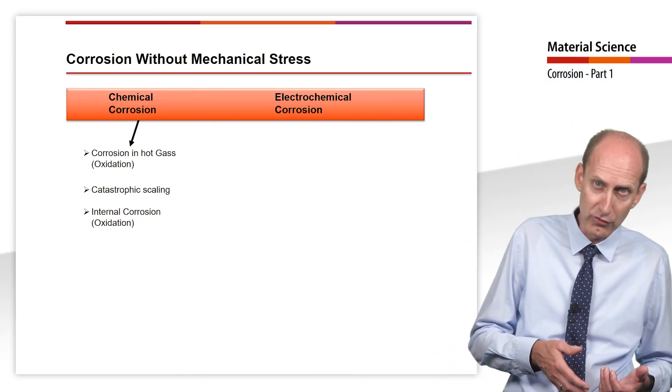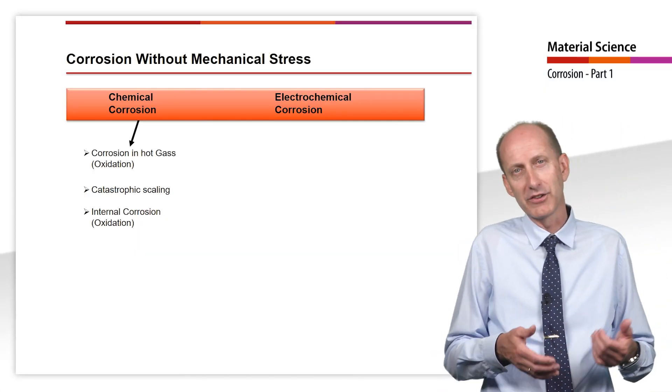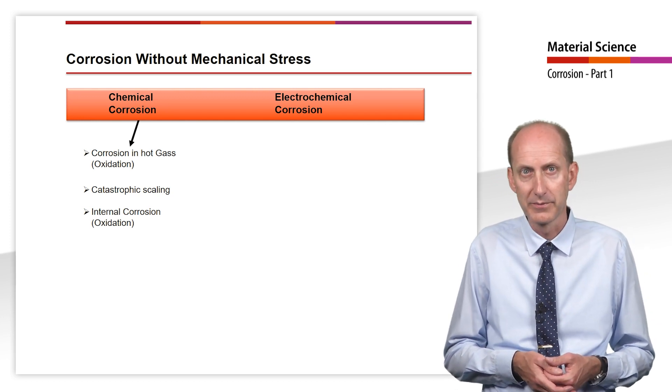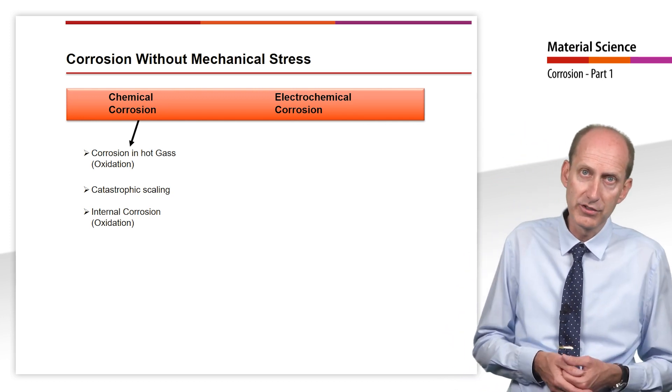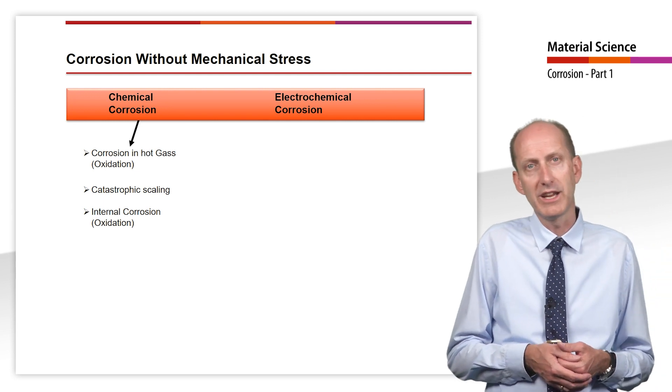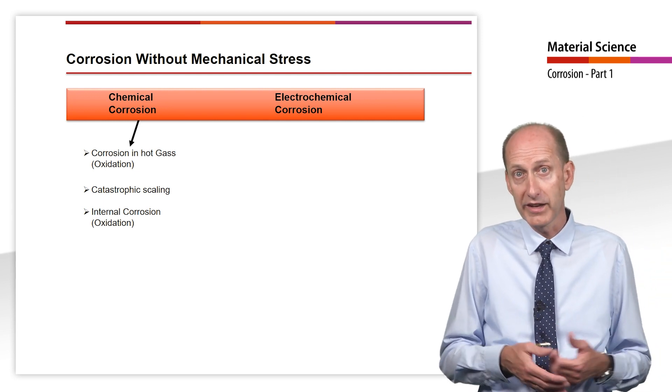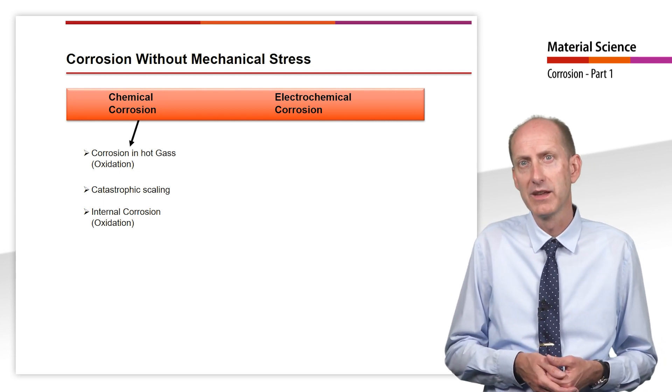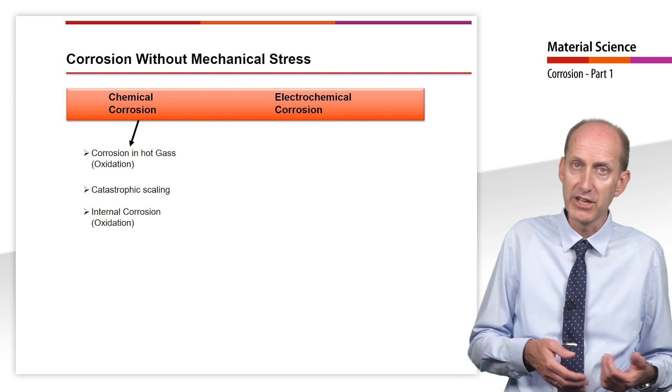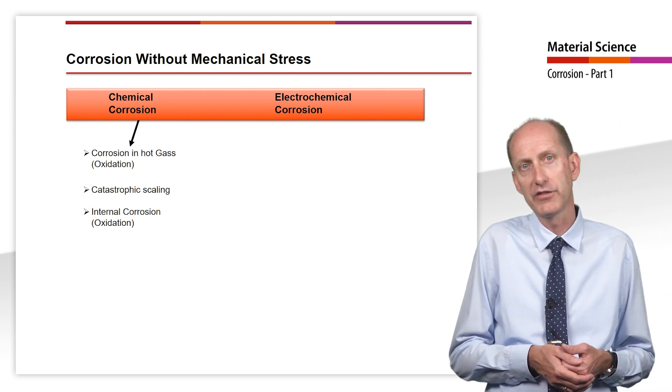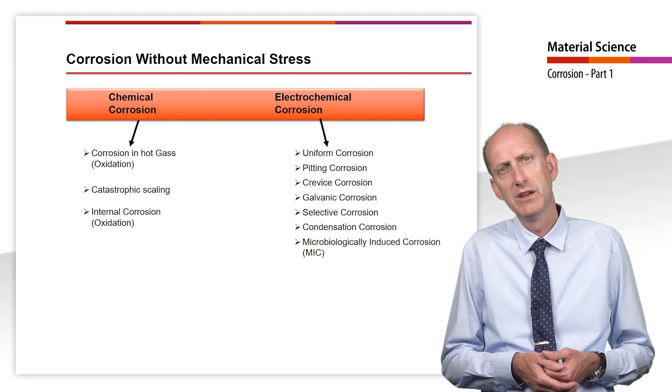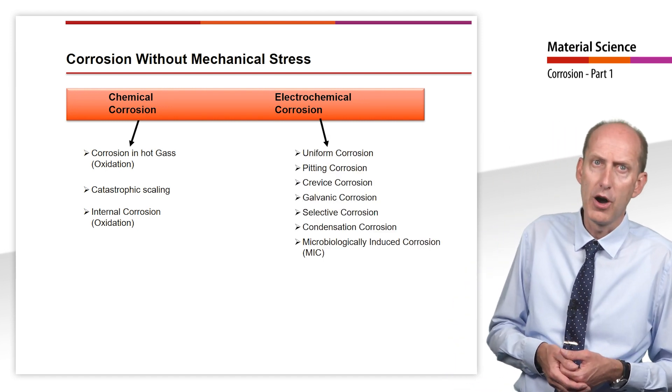Chemical corrosion without mechanical stress is the aforementioned corrosion in hot gases. Other types of corrosion that also lead to oxidation are catastrophic scaling, which is a more severe form of corrosion in hot gases, and internal corrosion, in which oxidation does not occur on the surface of the material but rather inside it.